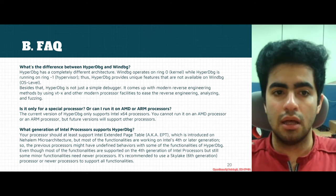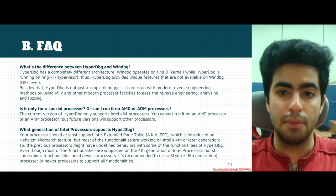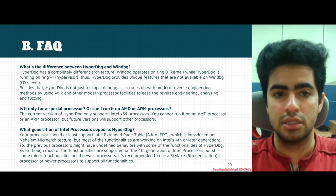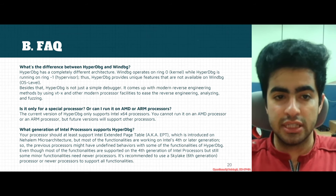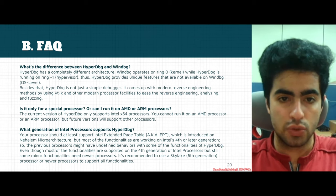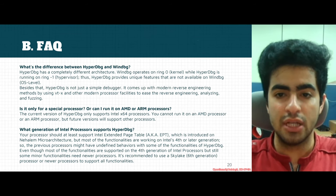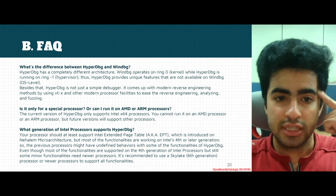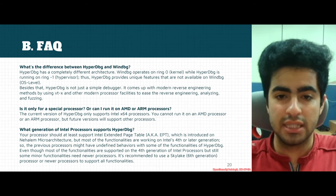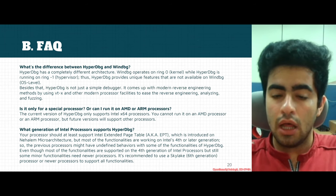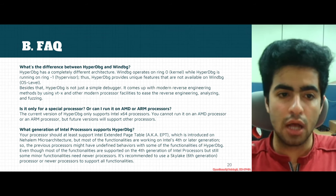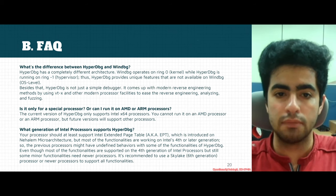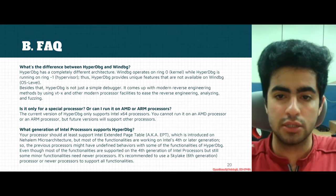Besides that, HyperDBG is not a simple debugger — it comes with many methods using Intel VT-x and modern processor facilities to ease reverse engineering, analyzing, and fuzzing. Regarding processor support, the current version of HyperDBG only supports x64 processors from Intel. You cannot run it on AMD or ARM processors currently, but future versions will probably support other processors as well.